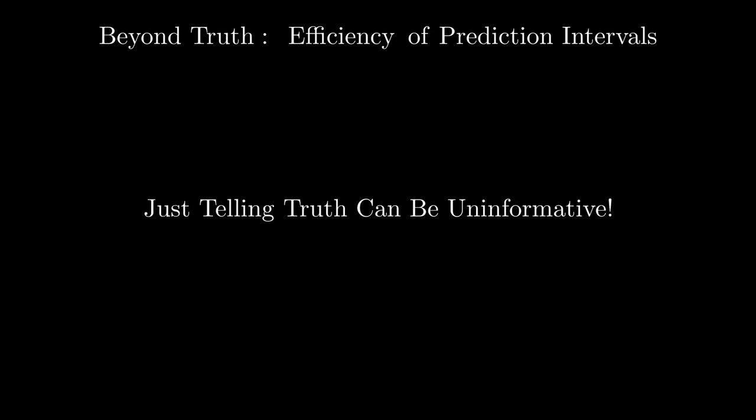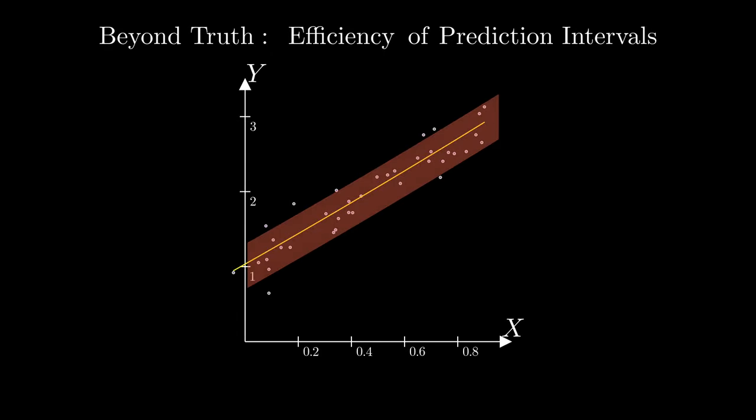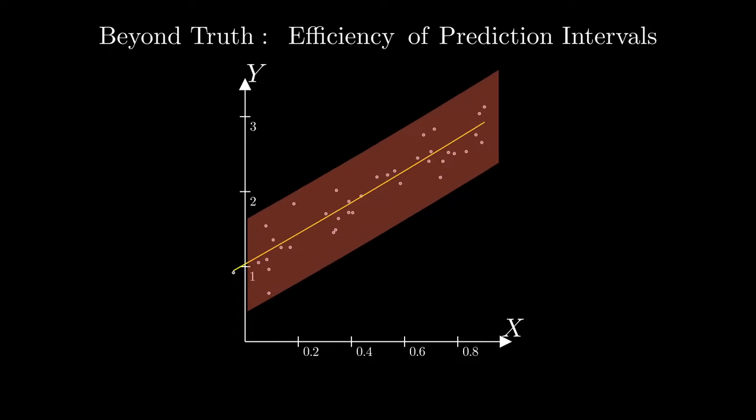Finite sample validity alone, however, is not sufficient. While a valid interval tells the truth, there is more to consider. In fact, it's possible to simply inflate the interval to ensure a high probability of it containing the true value.